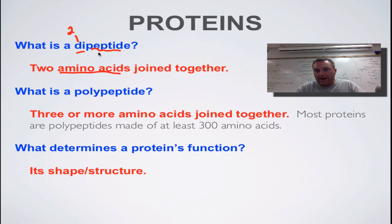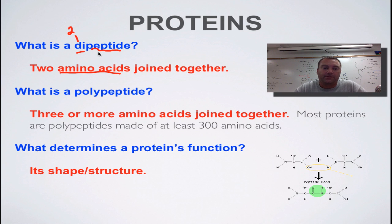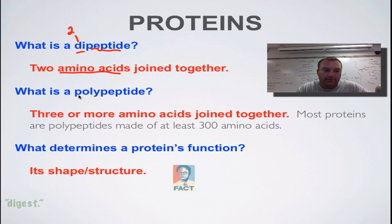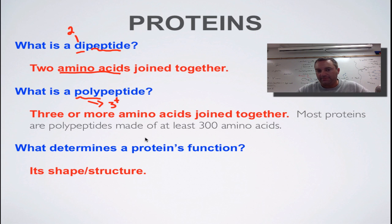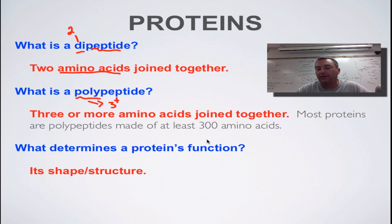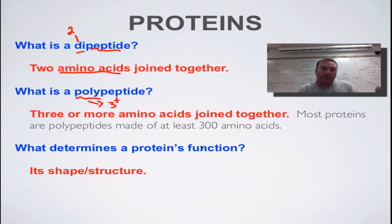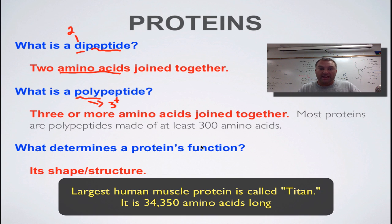The peptide part comes from the peptide bond that joins amino acids together. Now, 'poly' is a prefix that means many — and for us, many means three or more. Polypeptides and proteins are synonymous; a polypeptide and a protein are the same thing. Most proteins in your body are at least 300 amino acids long — think of a train with 300 cars attached. That's a very large molecule. We can call these organic macromolecules; the prefix 'macro' means big. Something with 300 units chained together is pretty big.